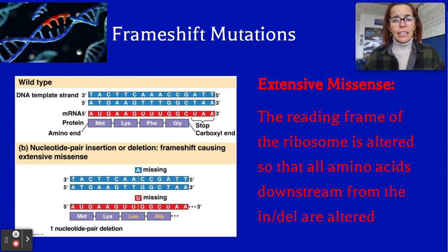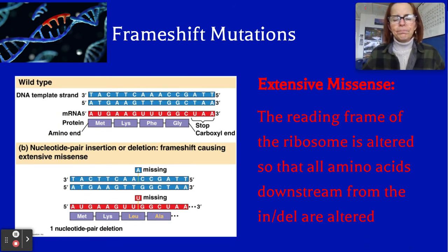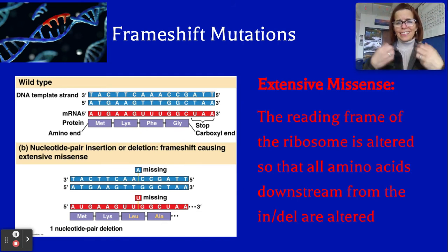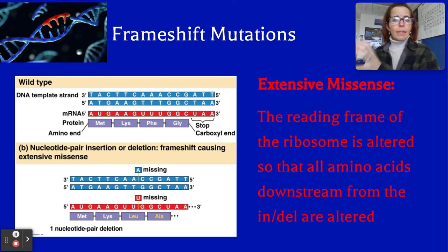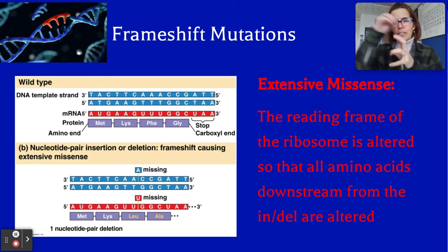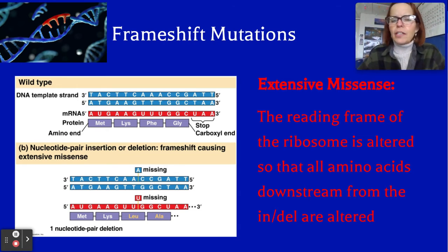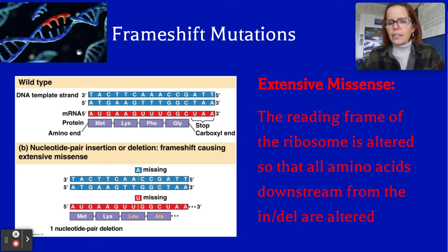The last type we're going to talk about are frameshift mutations. A frameshift is when we either insert or delete a nucleotide, and that screws up the order of the codons. The codons are read three letters at a time, and if you insert or delete one, you screw up the framing. The reading frame of the ribosome is altered so that all amino acids downstream from the insertion or deletion are changed.